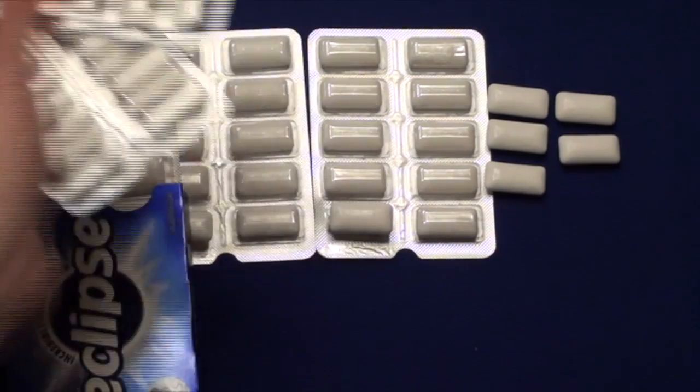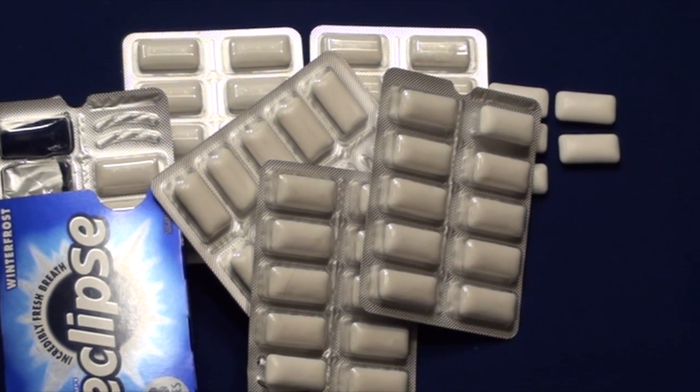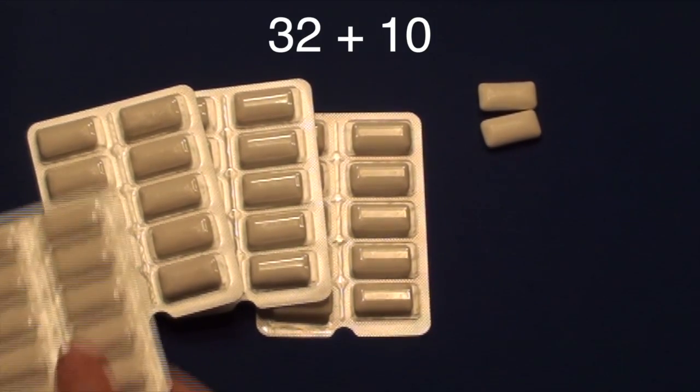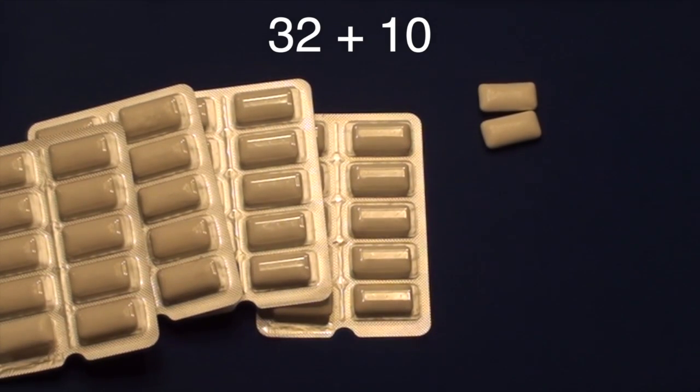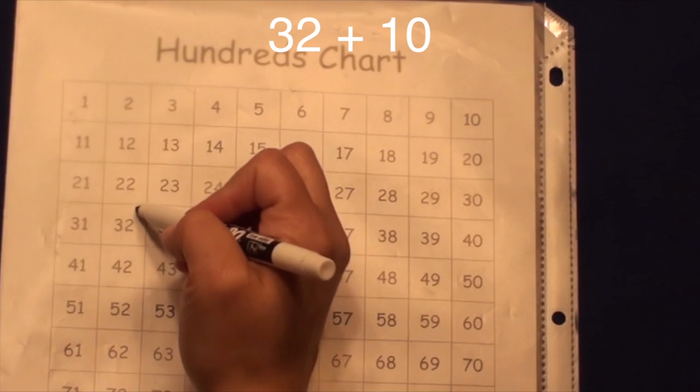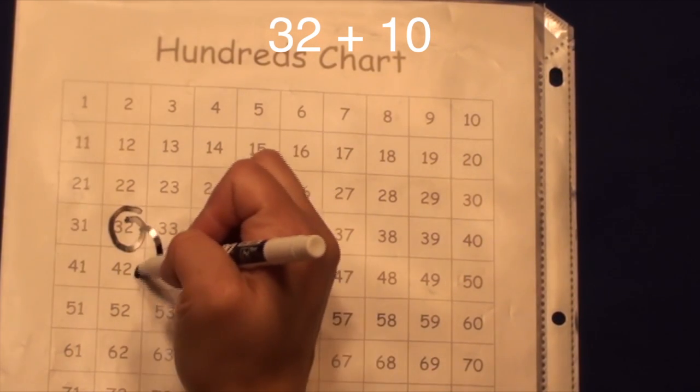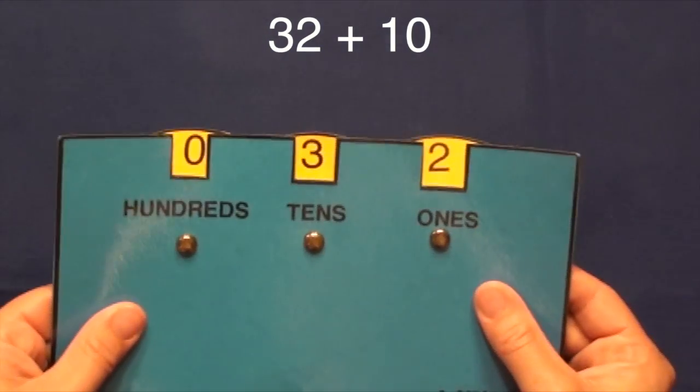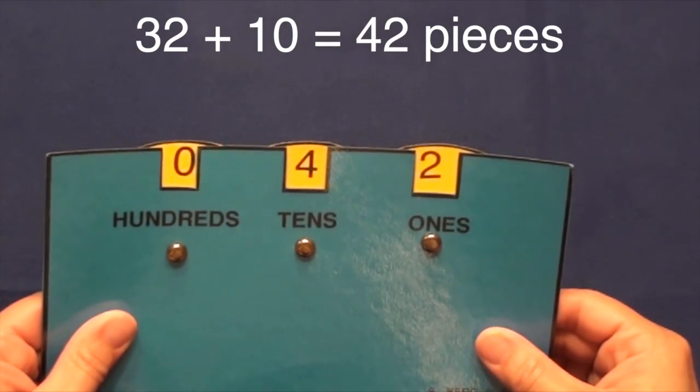Let's try another problem using the 10 more strategy. When I think of tens, gum packs come to mind. There are 10 pieces of gum in each pack. If I had 32 pieces of gum and added 10 more pieces, I could use the 10 more strategy to solve. I could use a hundreds chart, or a place value wheel. 42 pieces of gum. That was easy.